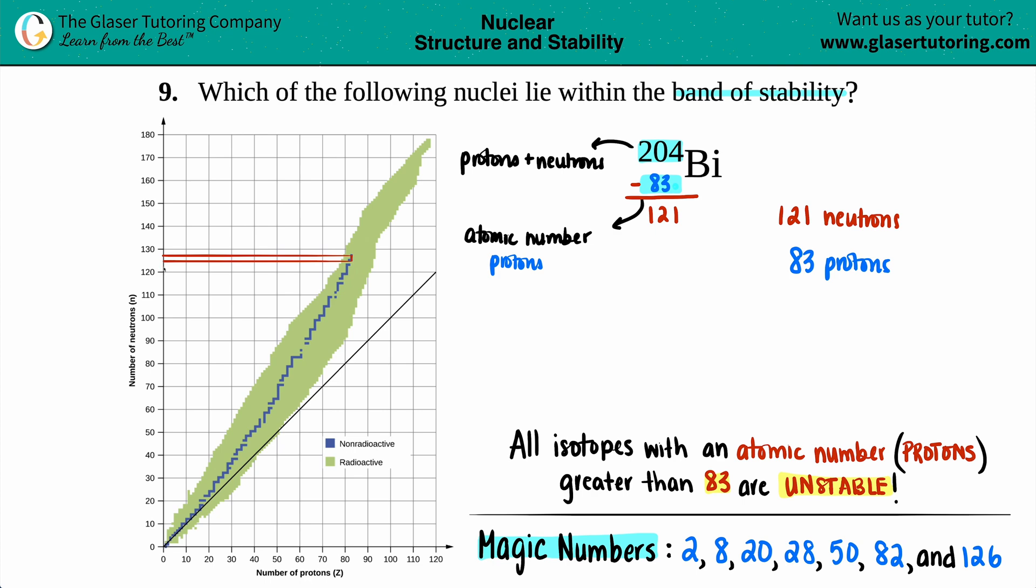Not really. 121 is supposed to be down here, I think it misses the mark because those are around 120-121, but since 83 is a little bit higher, I would say that this is not going to be in the band of stability.